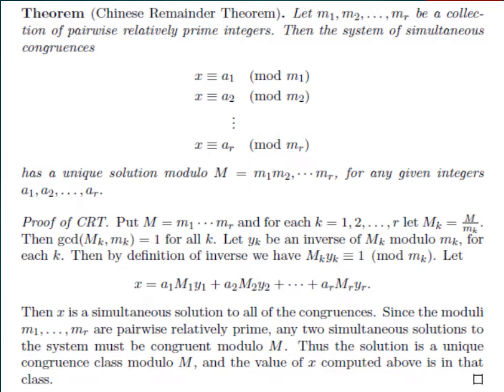Let us learn about the theorem. If m1, m2, and mr be a collection of pairwise relatively prime integers, then the system of simultaneous congruences — x is congruent to a1 mod m1, x is congruent to a2 mod m2, and so on, x is congruent to ar mod mr — has a unique solution modulo M, which is equal to m1 into m2 into mr, for any given integers a1, a2 to ar.